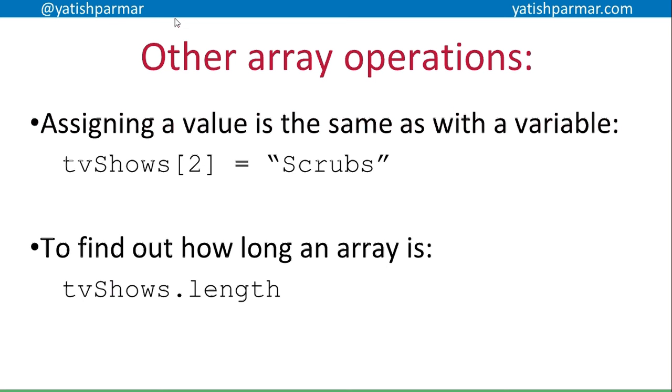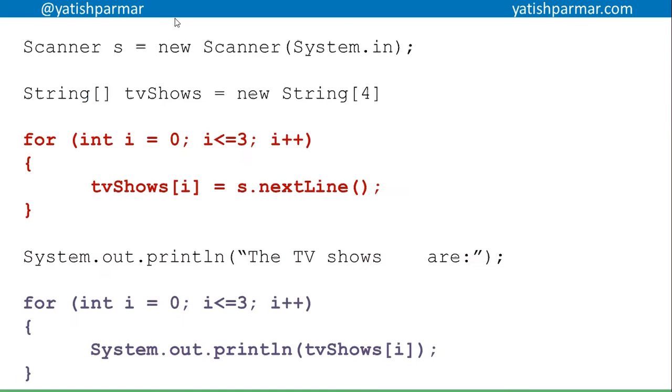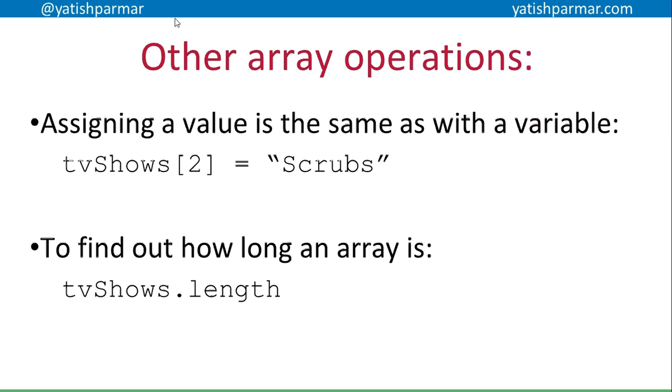Assigning values is the same with a variable - you can just do element equals whatever value you want to assign. In Java, and I'm assuming in several other languages, you can find the length of an array by doing the name of the array dot length. In several languages, arrays are fixed in size. Once you've declared an array, that's it - that's how big the array is. It doesn't shrink and grow, which obviously has implications for how your program will operate.